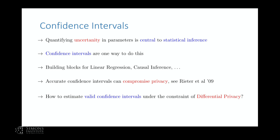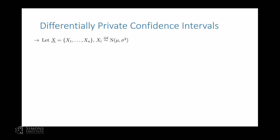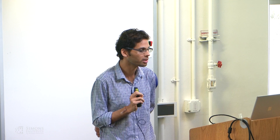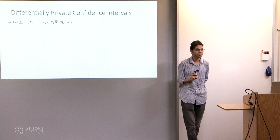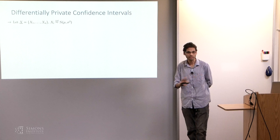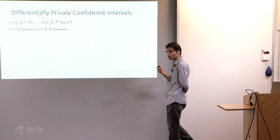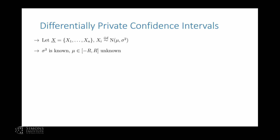Let me set up the problem statement. We are going to be in the simplest possible world throughout this talk — you'll see that even in this simple setting, there's a lot to be done. We're in a one-dimensional setup with n data points coming from a normal distribution with mean mu and variance sigma squared. We'll also assume sigma squared is known for this talk. What we don't know is the parameter mu, the mean, and we assume mu lies in the interval [minus R, R]. Without privacy this isn't needed, but with privacy we'll see it's a necessary assumption.